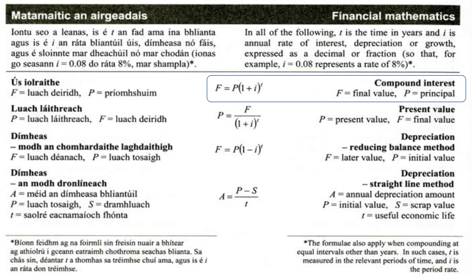Just to be aware: at the top of the page it says t is the time in years and i is the annual rate of interest, depreciation or growth expressed as a decimal. For example, 0.08 would be eight percent. There's also a note at the bottom that says the formula also applies when compounding at equal intervals other than years — in that case t is measured in the relative time periods and i is the period rate. So if i is monthly, t must be in months.